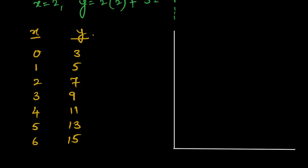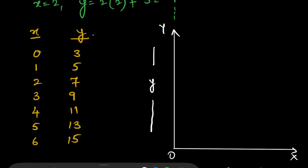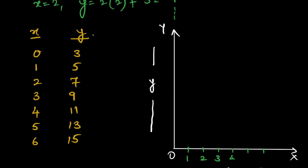Now, how are we going to plot this graph? I have drawn two axes, Ox and Oy. I am going to take the values of x on the Ox axis and the values of y on the Oy axis. First, I need to look at the values of x — they are equally spread and the greatest number is 6, which will fit on the Ox axis easily. So I divide the Ox axis into equal parts: 1, 2, 3, 4, 5, 6.